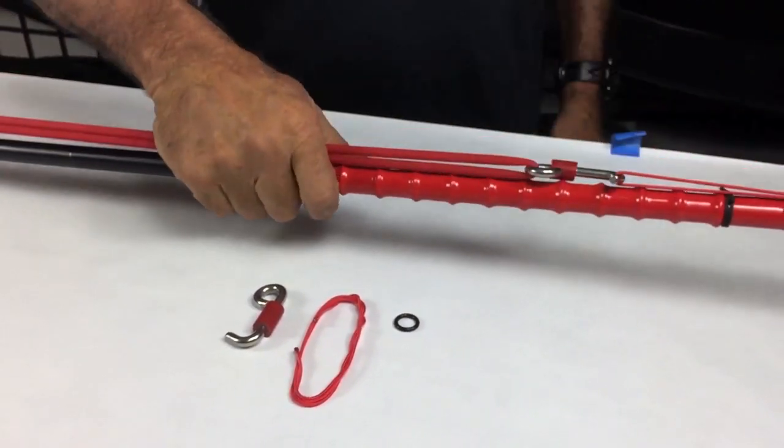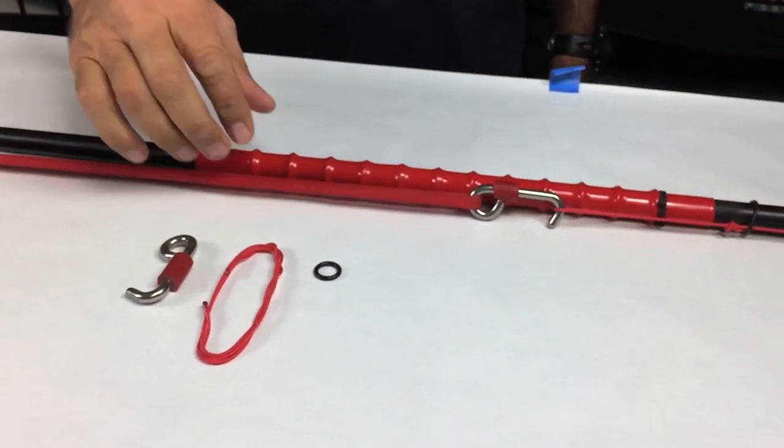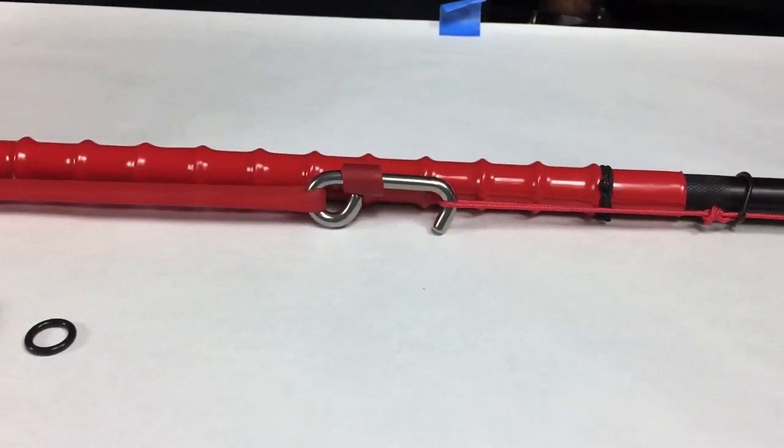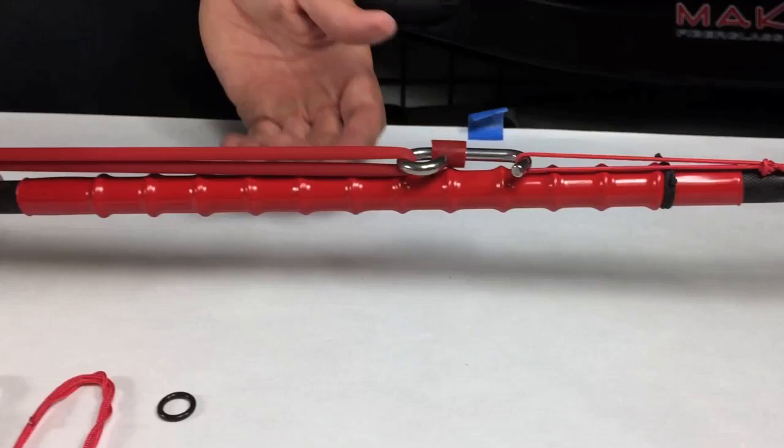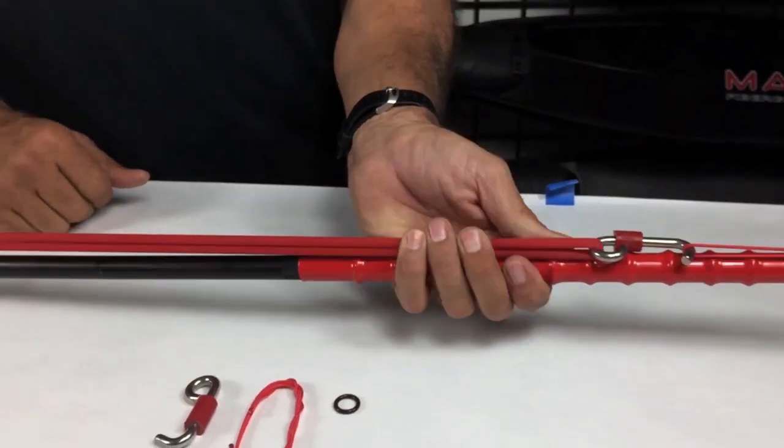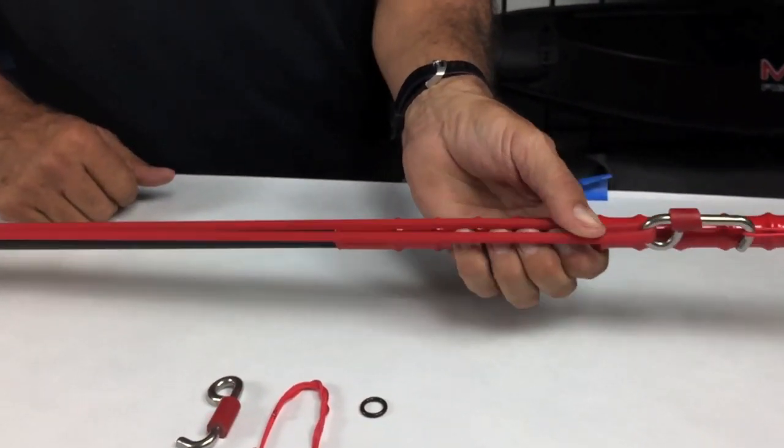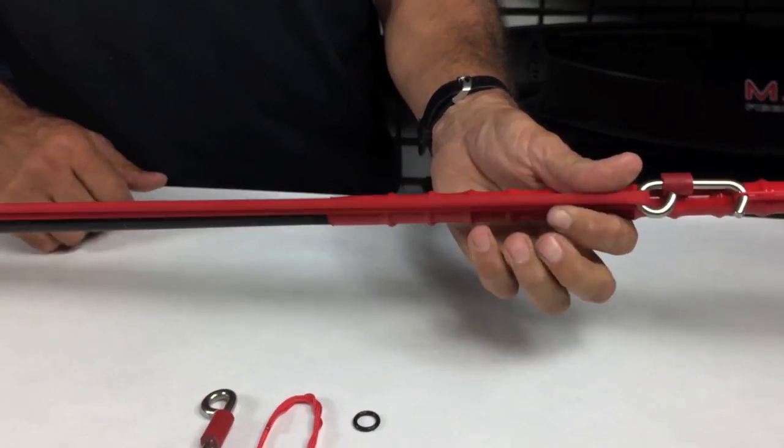With the resting hook engaged, you can swim around for as long as you want with no pain and no muscle fatigue. The Pole Spear Resting Hook even allows you to change hands while the band is loaded, which is essential when hunting tight structures or when diving in current.